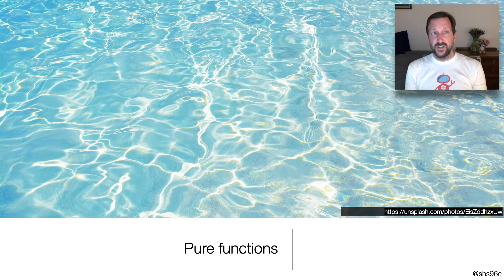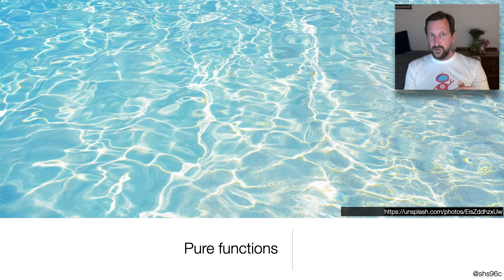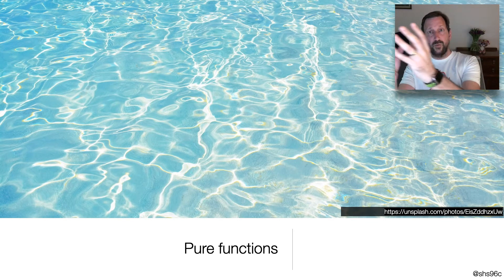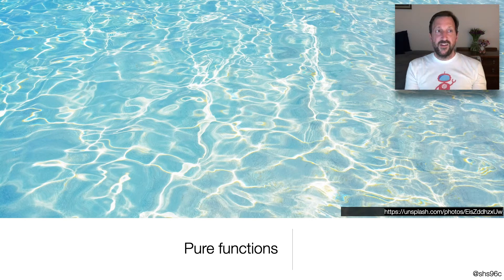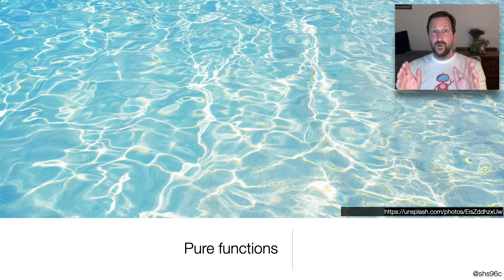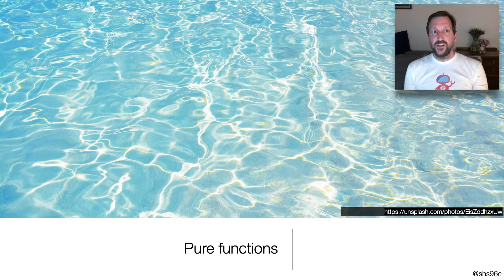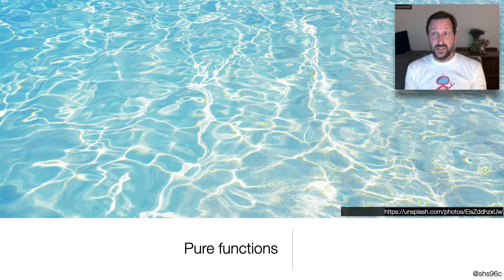You can imagine your build being composed of a series of boxes, each of which takes in some inputs and transforms them into one or more outputs. In computer science, we typically call these boxes functions. When there's a guarantee that the same inputs will produce the same output, we have something called a pure function. These are really useful in builds, because if we know that the same inputs would produce the same output, we can cache the result and skip the expensive and messy bit of doing actual work, and just use the same value we created last time.